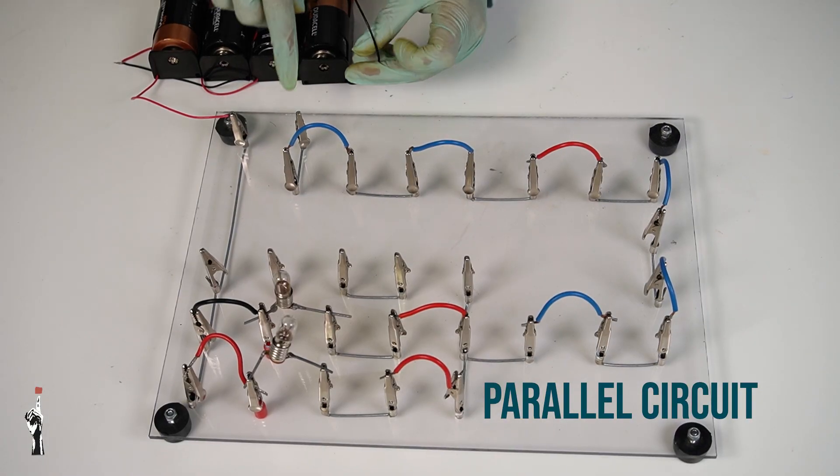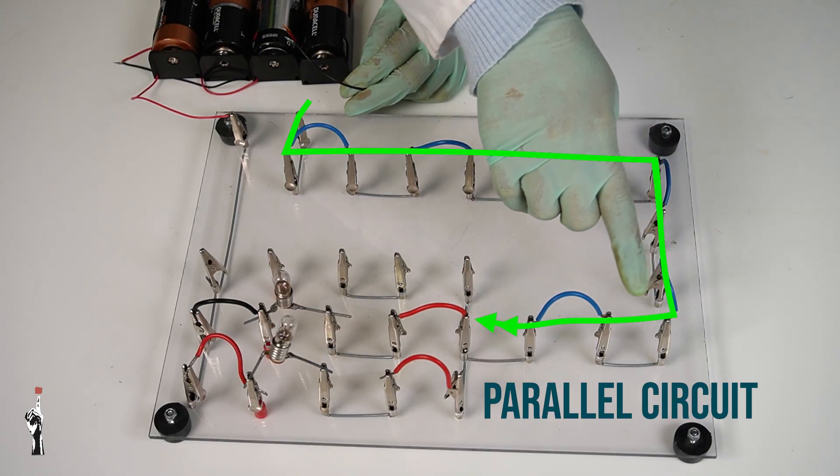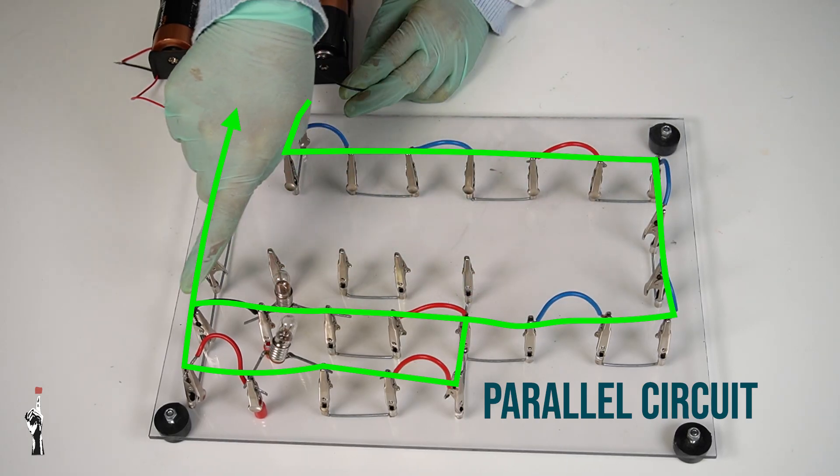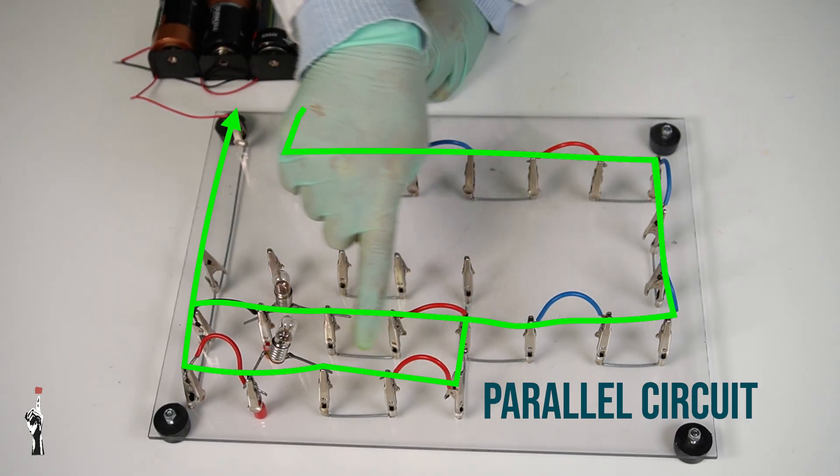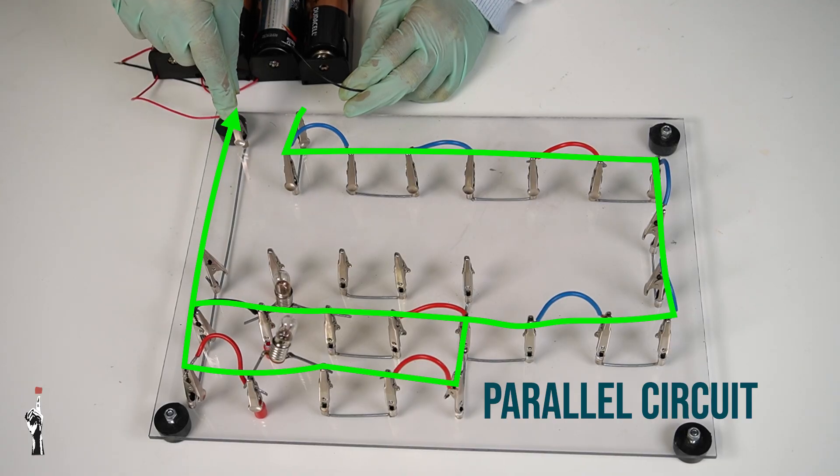So, you can see here from the batteries, the current is going to flow through the main circuit, and then it's going to split into two separate branches. Here's one branch, here's another branch, and then the branches come together again, leading back to the battery.